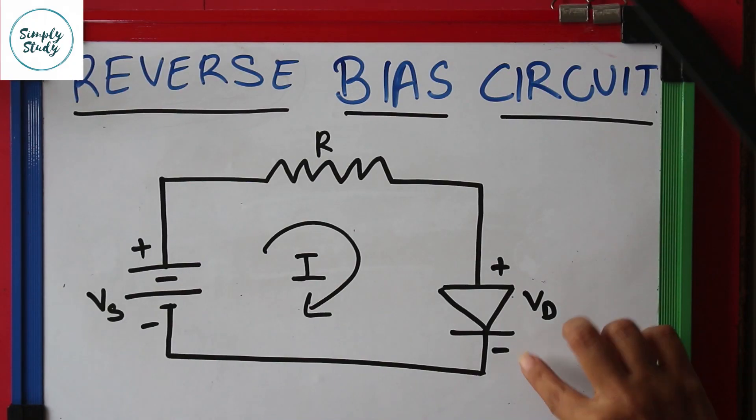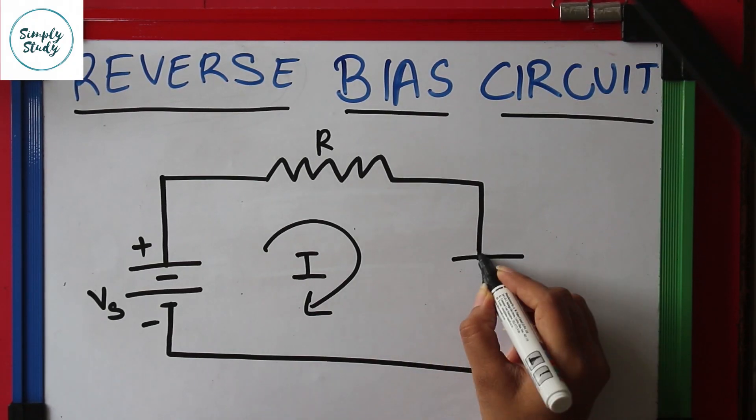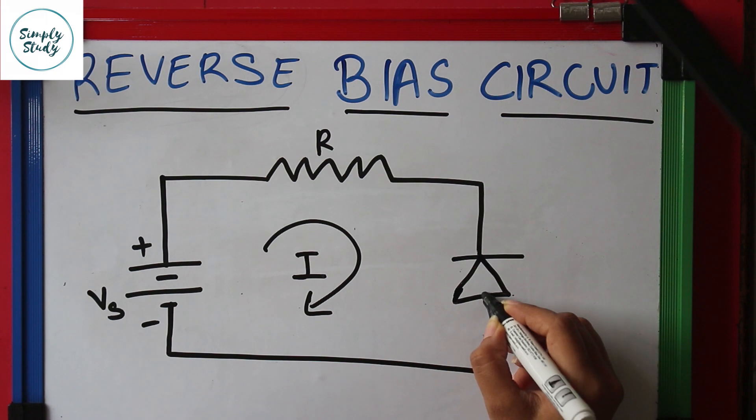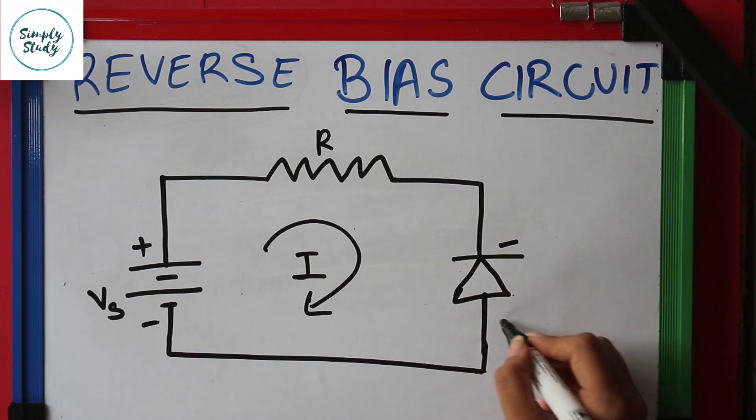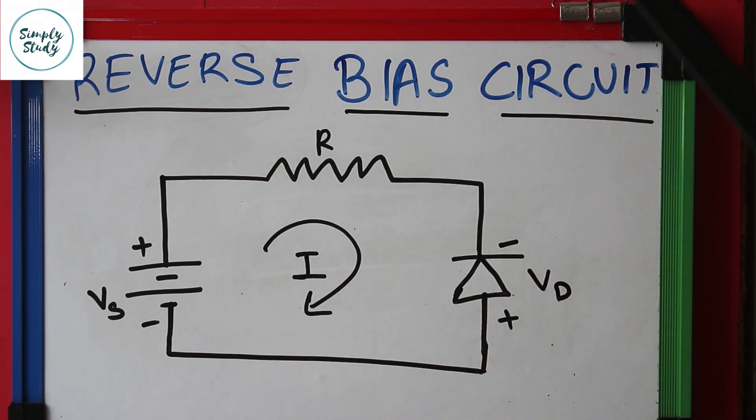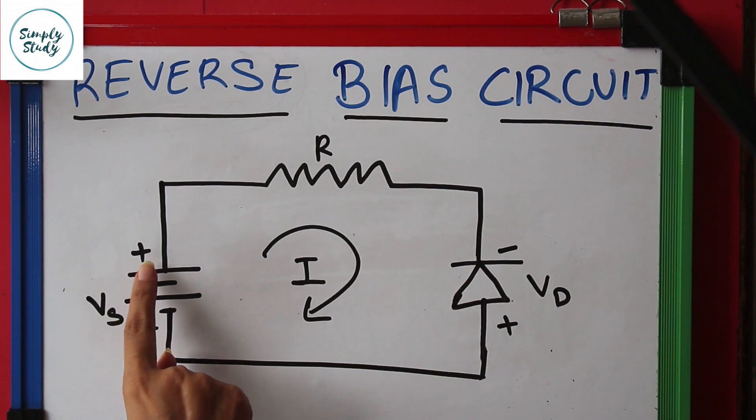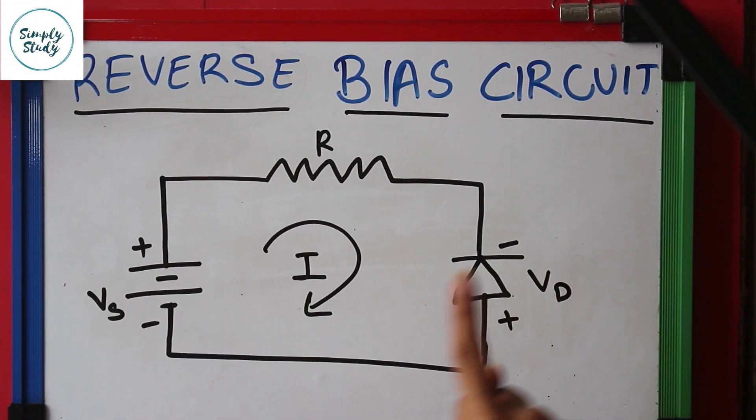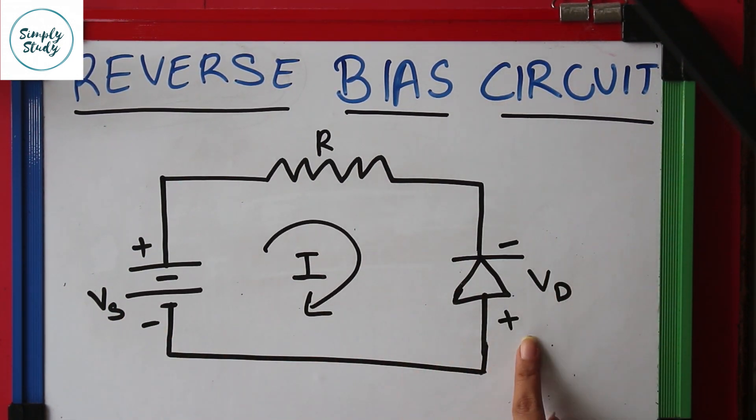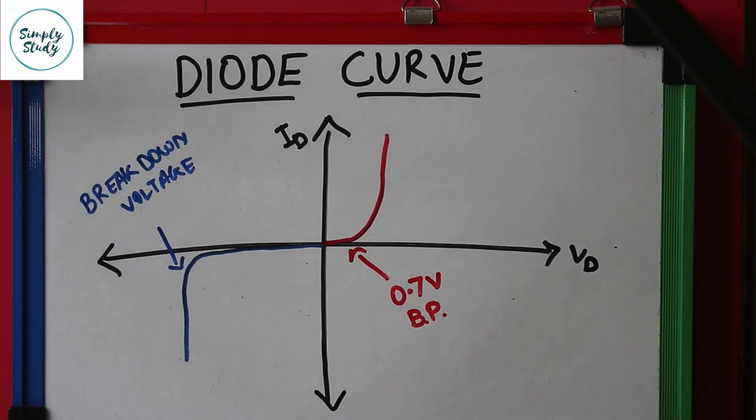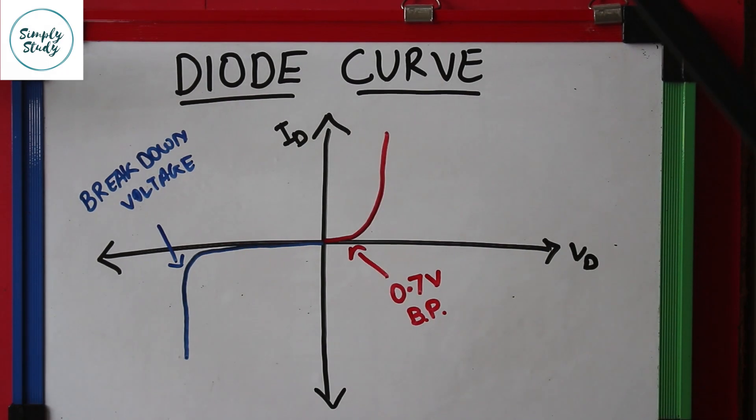Let us now see the reverse bias circuit. Just by rotating the diode in the opposite direction, the circuit becomes reverse biased. In the reverse bias circuit, the positive terminal of the battery is connected to the negative terminal of the diode, and the negative terminal of the battery is connected to the positive terminal of the diode, that is the P junction.